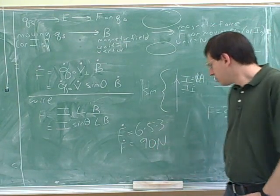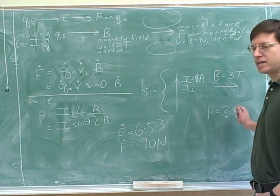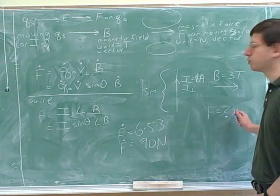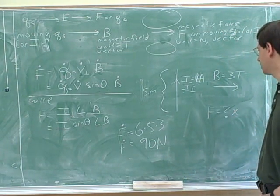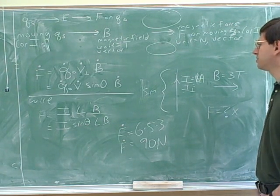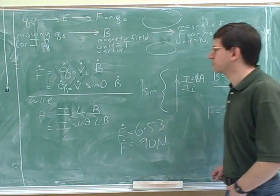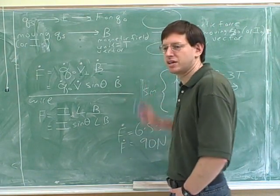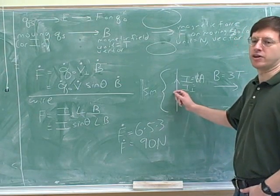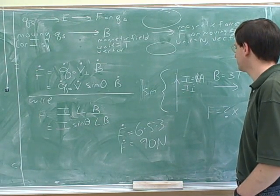If you had to assign this a sign, well, if you're choosing into the board as the negative direction, this would be negative 90 newtons. But in many cases, we can just say the direction in words is into the board. So these problems are maybe a little bit easier because we don't need to worry about figuring out qv. Yeah. Because again, we always assume positive current as conventional current.